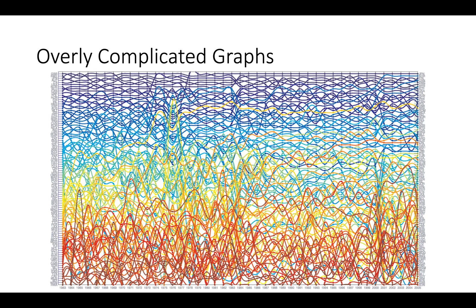The next graph is even more complicated. It shows the status of different economies — each line represents a different country, listed up and down the left side. The years are at the bottom and you have to follow each country's line through the graph. It's really bad. It gives you no information. That's the real problem with overly complicated graphs: nobody gets anything out of them.